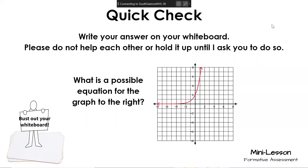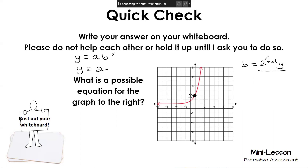Let's say they give us this graph and we have to write the equation for it. A reminder: the initial value is a fancy way of saying y-intercept. So what's the y-intercept on this graph? If we were going to write the equation, we'd say 2 times b to the x. We find b by taking our second y value and dividing it by our first y value. We have 2 and 6, so six divided by two gives us 3.